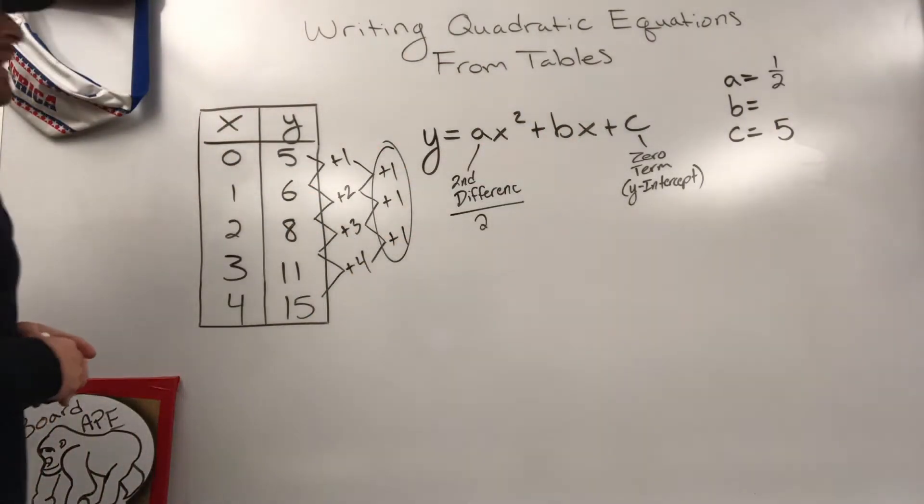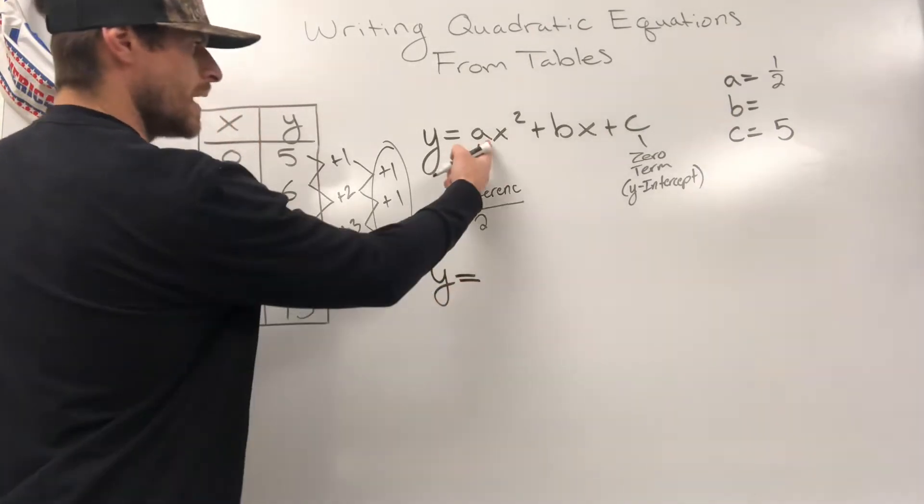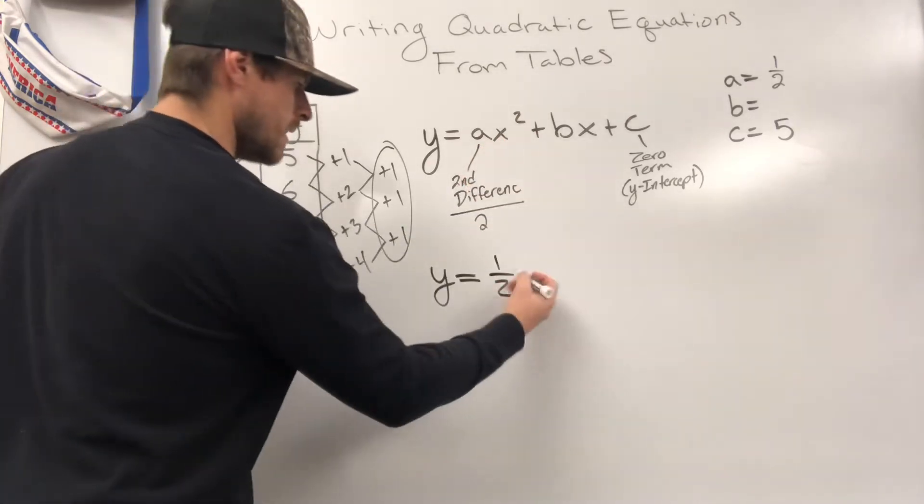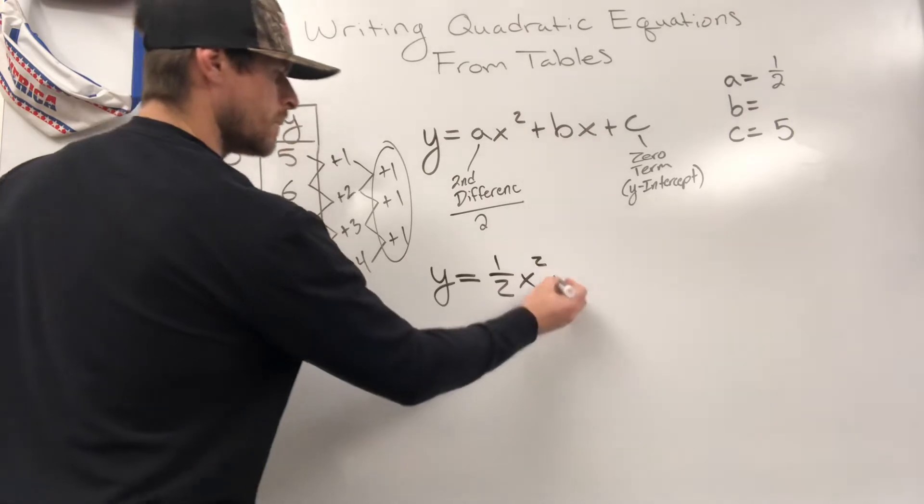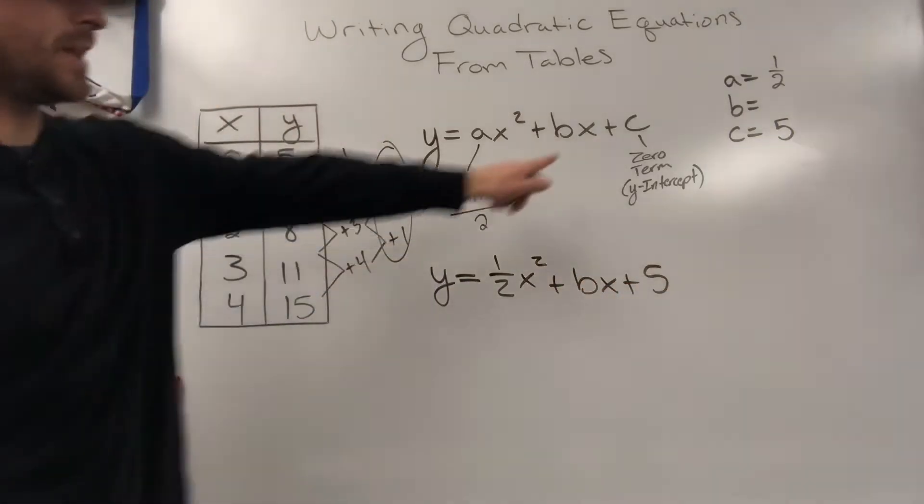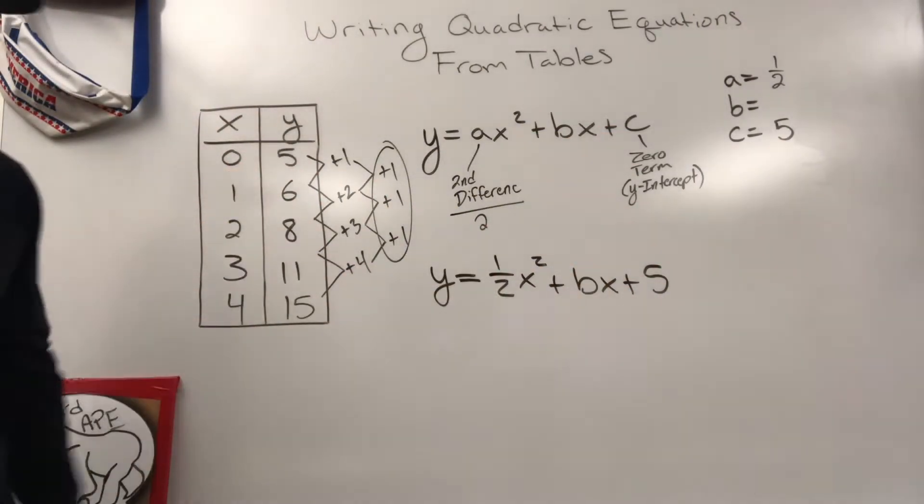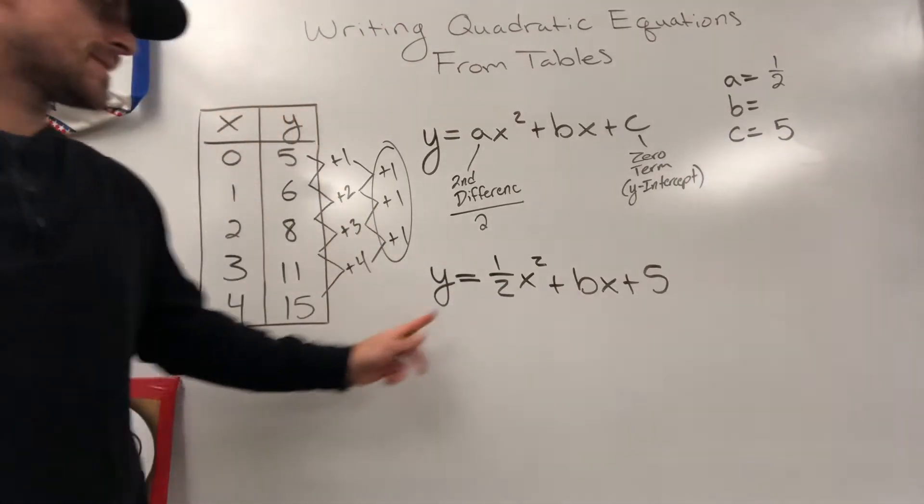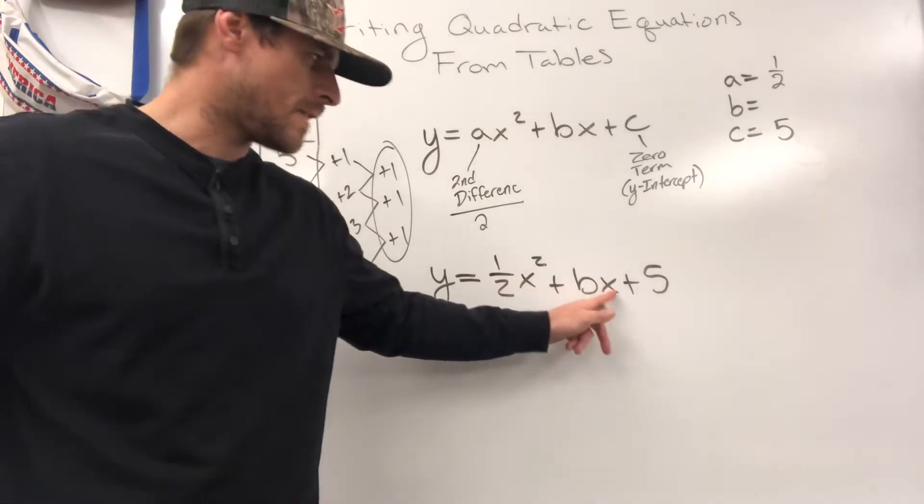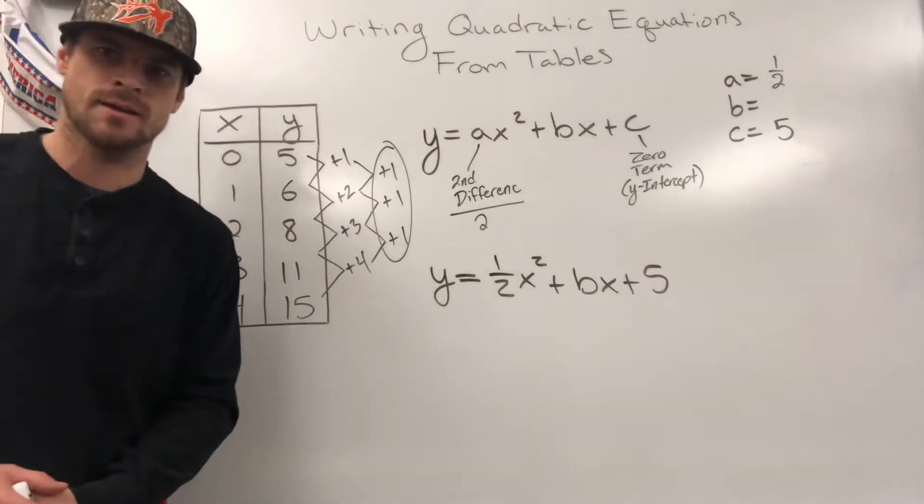Let's write what we know. I know y equals, I know a can be written as one half x squared plus B x plus five, because I changed the C to a five, because I know it's my zero term. This is all fine and dandy, except I'm still missing B, and the only way to get B is if I can change that x to a number, that x to a number, and that y to a number, so I can start to simplify some things.